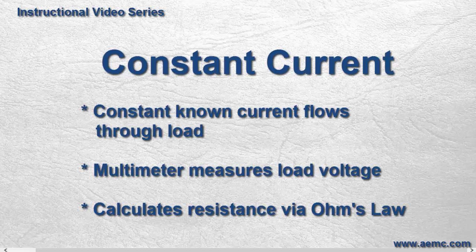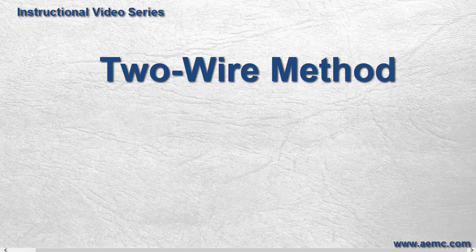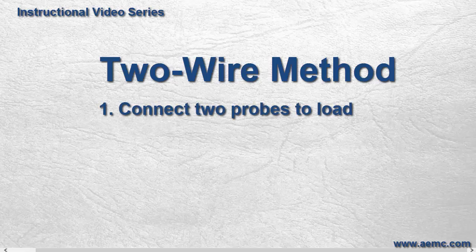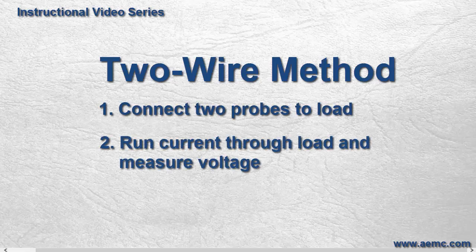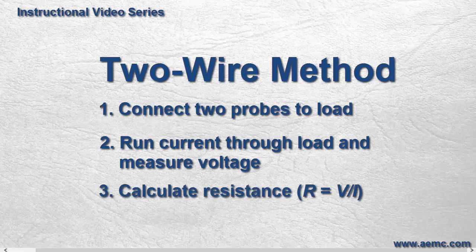A relatively simple setup for constant current and resistance measurements is the two-wire method, also called the two-probe method. This entails connecting two probes to the load under measurement, running a known current through the load and measuring the resulting voltage, and then calculating the resistance.